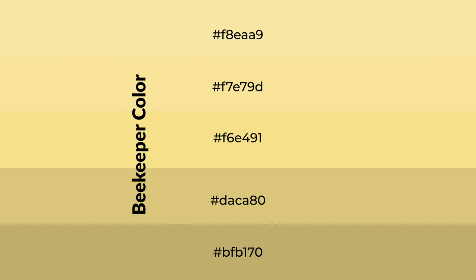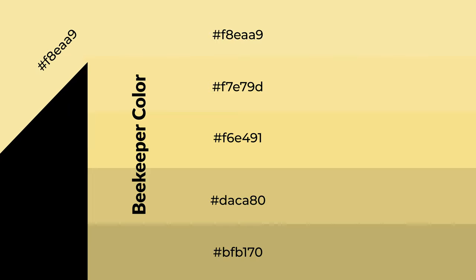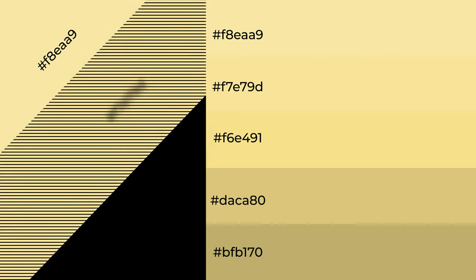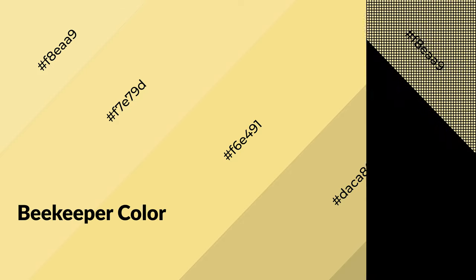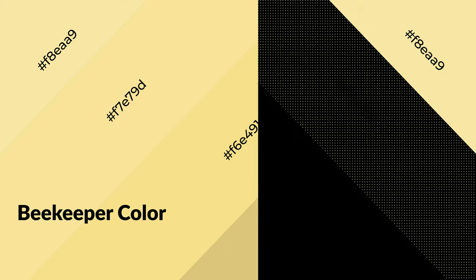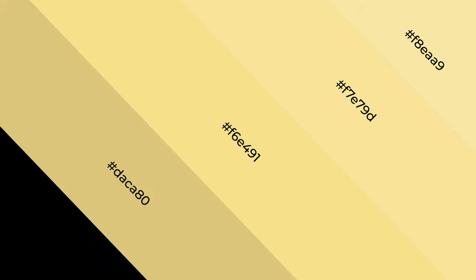To generate shades of a color, we add black to the color. Shades are used in patterns, 3D effects, and layers. Shades create depth and drama. Beekeeper is a warm color and it emits cozier and active emotions. Warm colors are symbols of warmth, fire, heat, and sunshine.